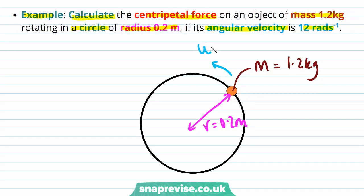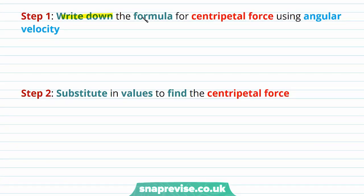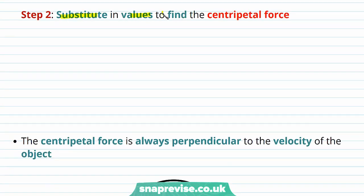We know that its angular velocity omega is equal to 12 radians per second. Step 1 is to write down the formula for centripetal force using angular velocity. In order to calculate centripetal force from the information we've been given, we need to multiply mass by radius by angular velocity squared. Step 2 is to substitute in values to find the centripetal force.